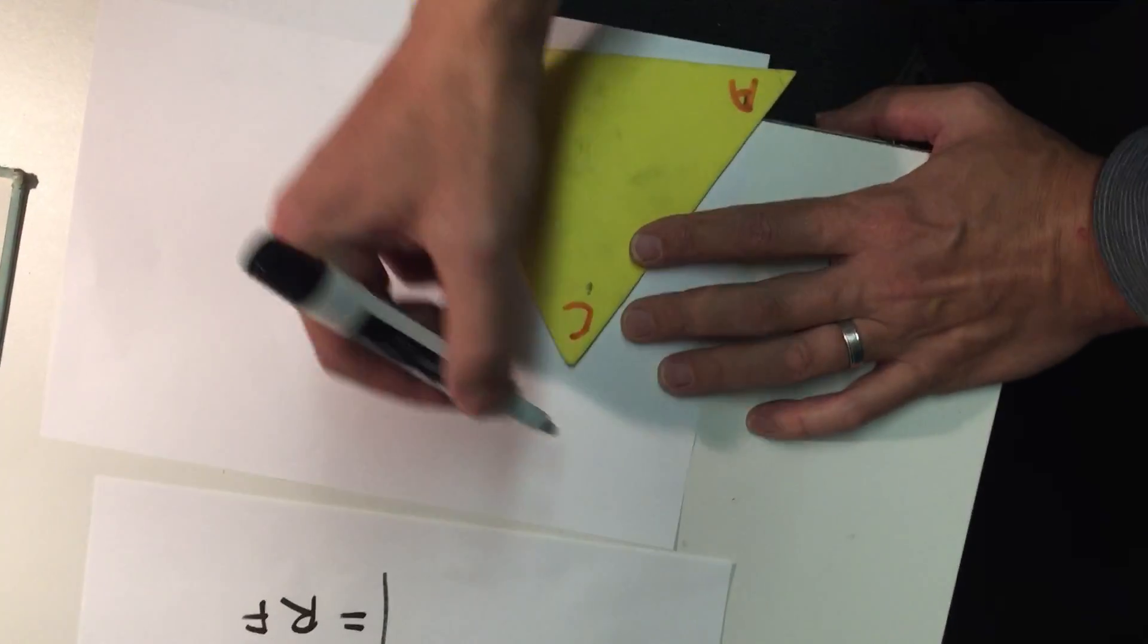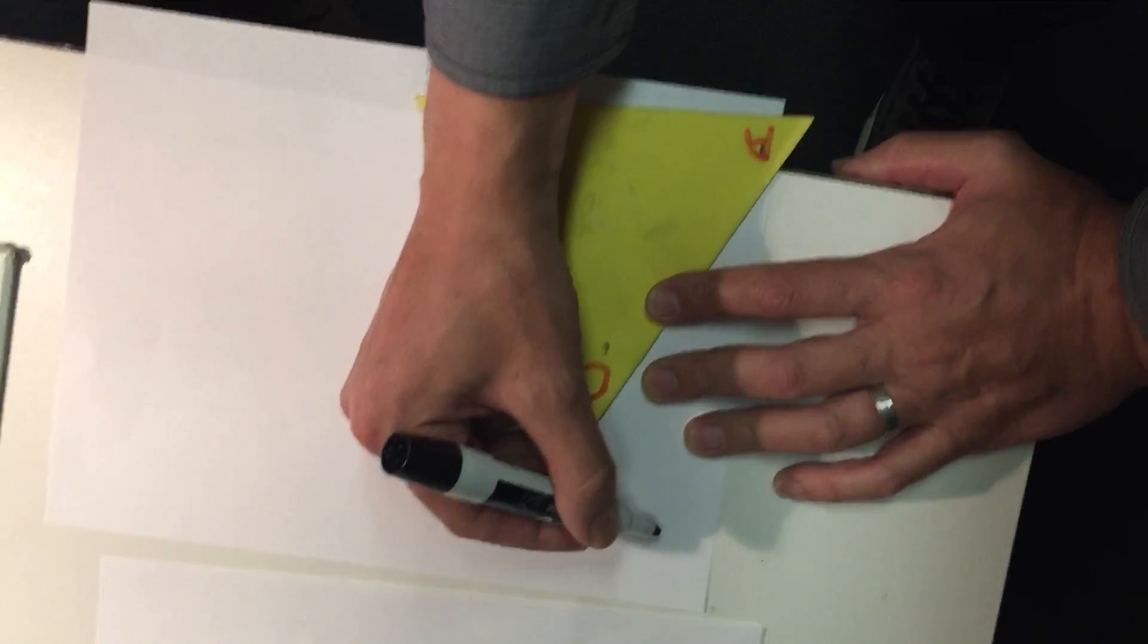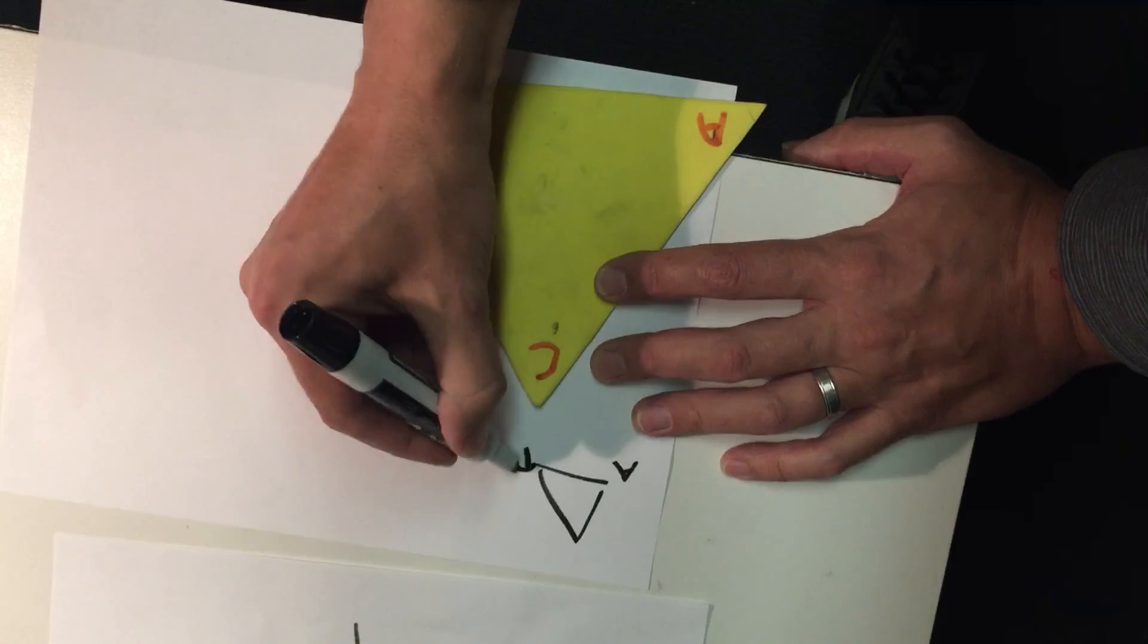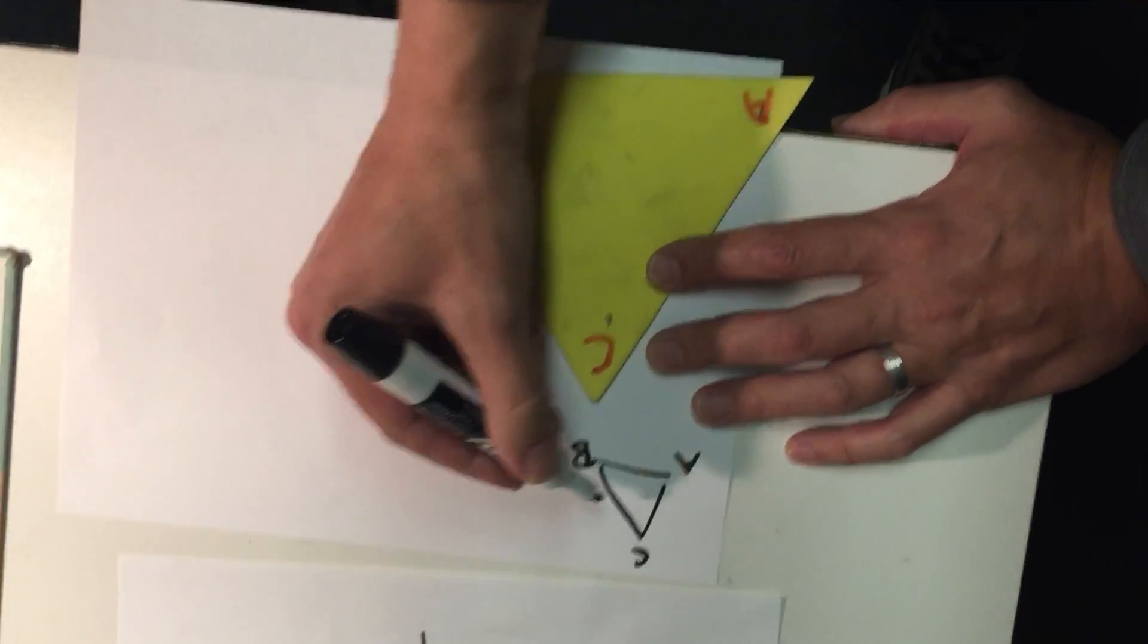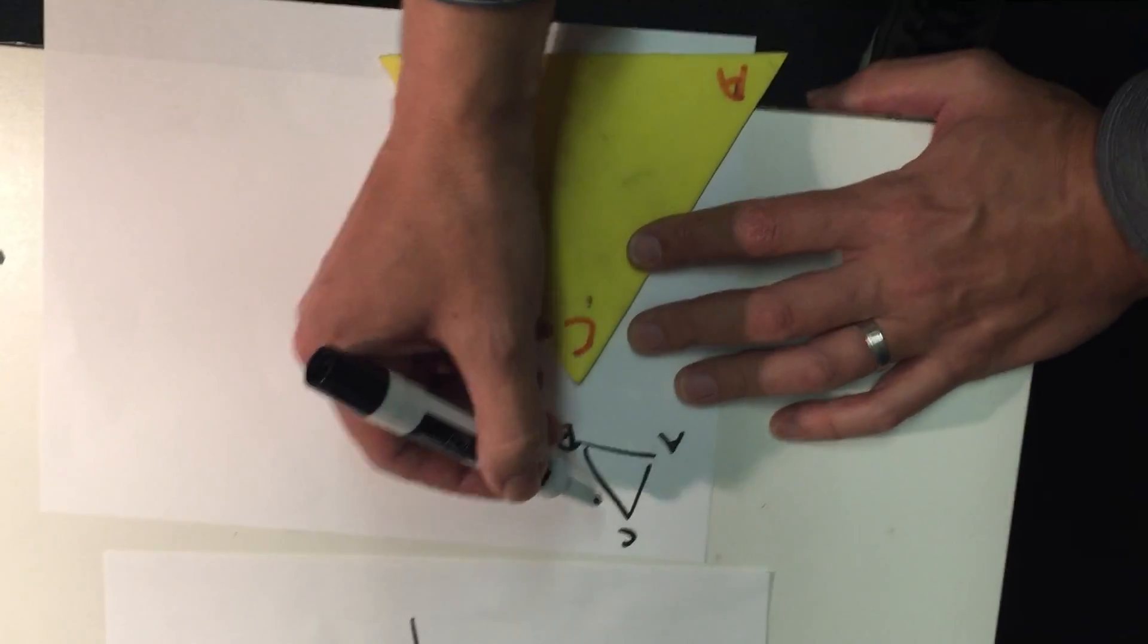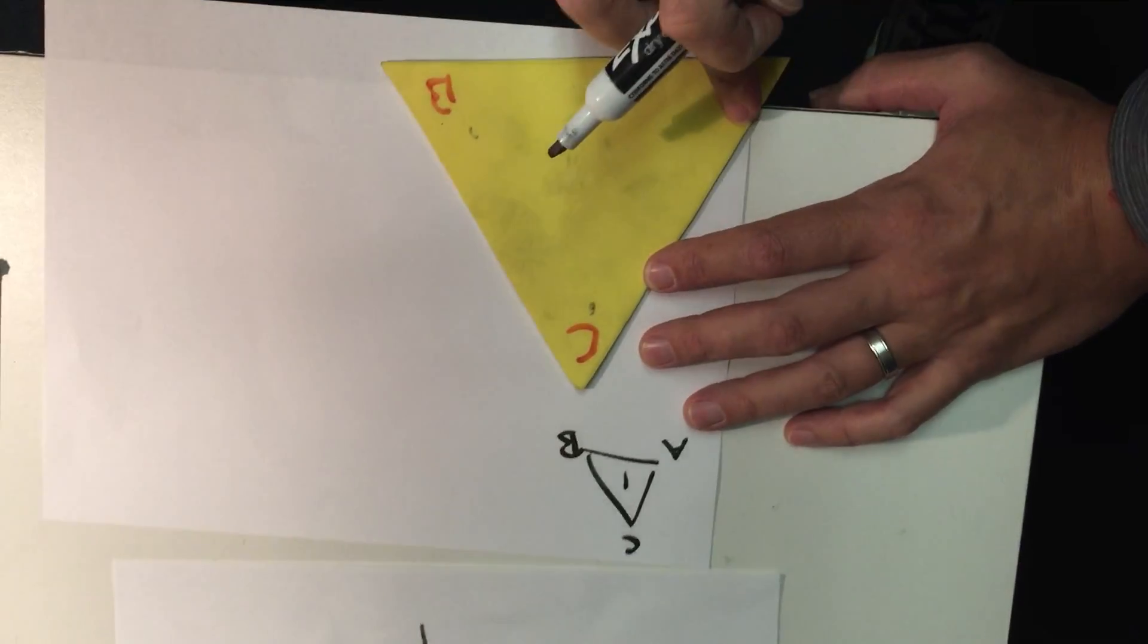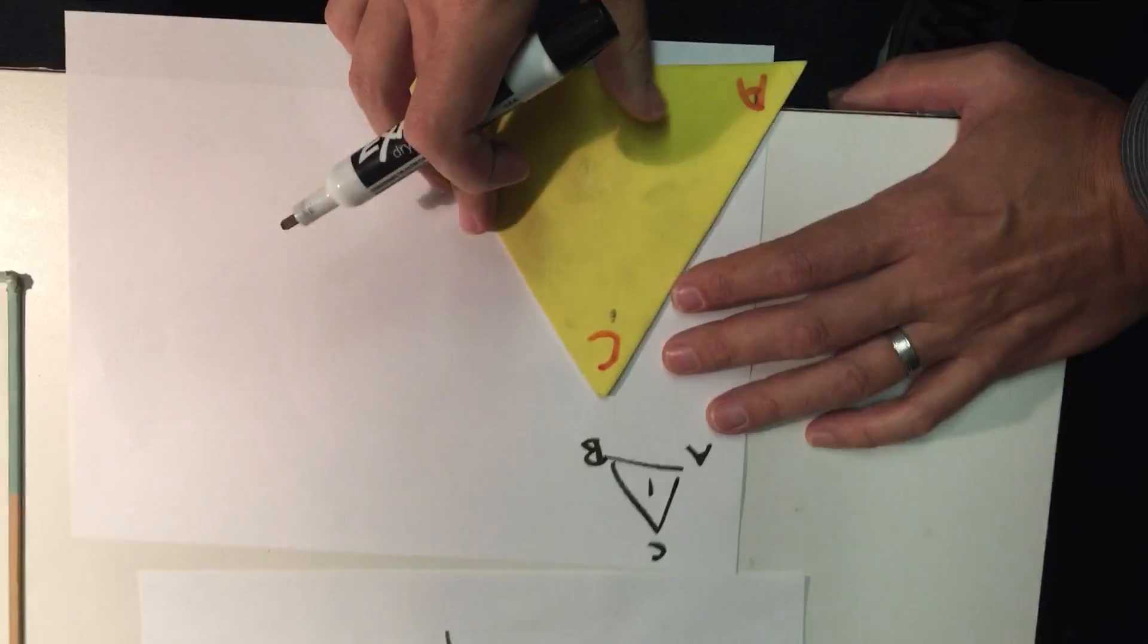So with this method, I'm going to flip and reflect the triangle several times. Now, keep in mind that the original position, what we call 1, has A on the bottom left corner, then B on the bottom right, and C on the top.